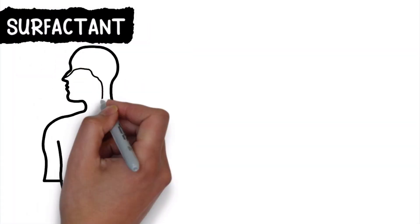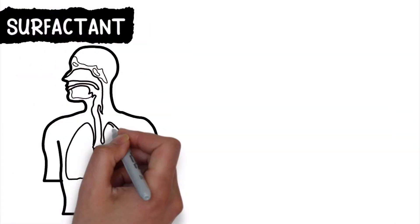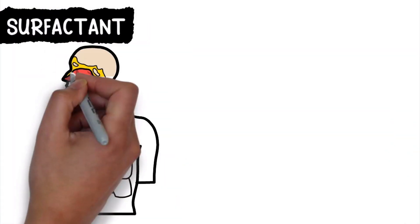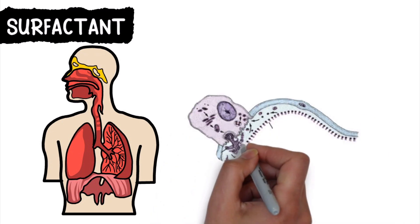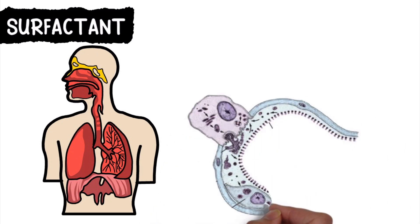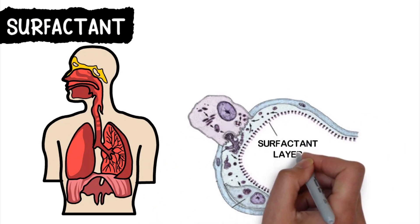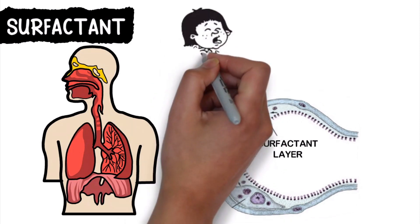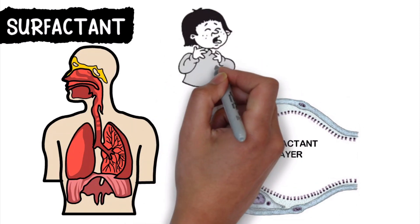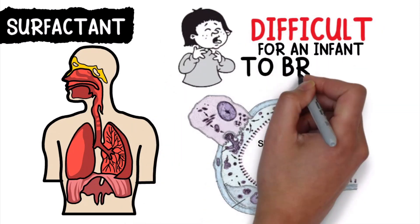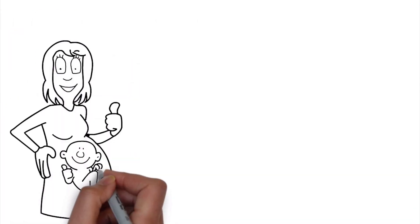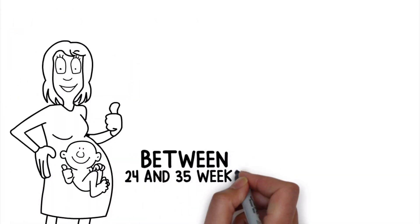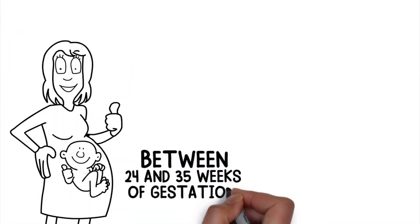Surfactant plays an extremely important role in lung functionality. It's a liquid substance that lines the alveoli, and without this coating, it makes it difficult for the lung to expand, which makes it difficult for an infant to breathe. The production of surfactant begins to develop between 24 and 35 weeks of gestation.